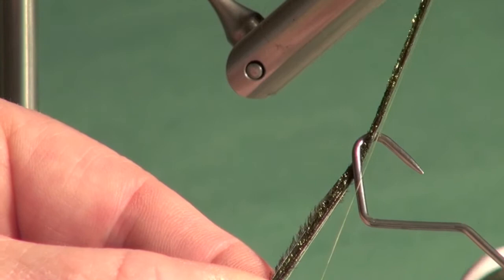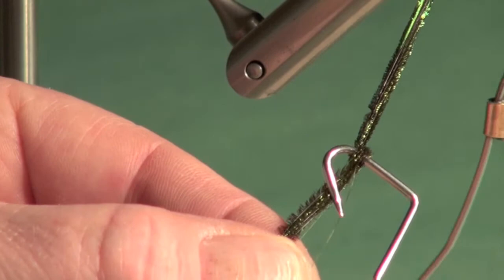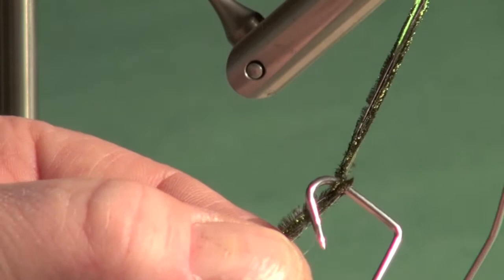Now I'm going to twist and rotate the tool bringing the point through the thread loop here. See how that thread, the point has gone through the loop and gently pull down. And I have locked that peacock herl and thread together.